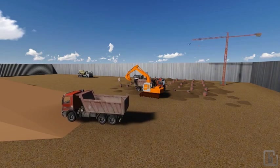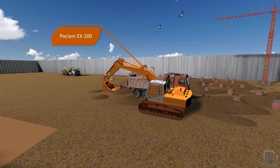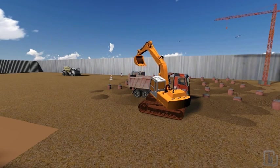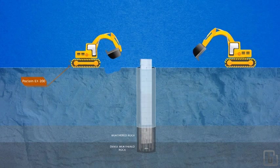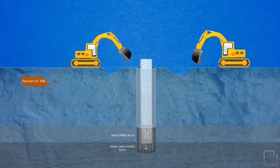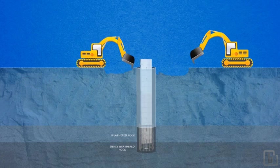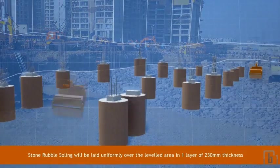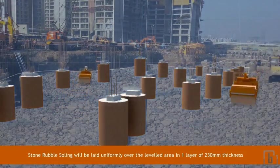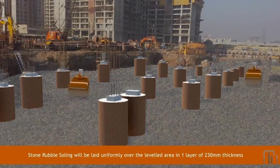Ground floor slab: After installation of column, activity for ground floor slab will be started. For ground floor slab, excavation will be carried out up to level of plus 0.4. After that, the area will be leveled for working for the ground floor slab for receiving rubble soiling. Stone rubble soiling will be laid uniformly over the leveled area in one layer of 230 mm thickness.